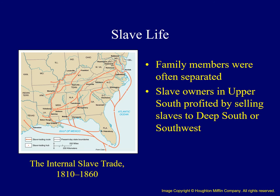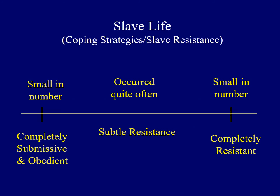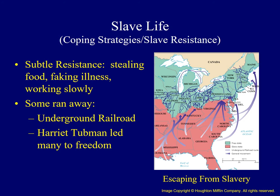However, there was always a potential that family members could be separated from one another. This map shows the internal slave trade in the United States. Many slave owners from the Upper South made large profits selling slaves to whites living in the Lower South or Southwest, where slavery was expanding. This image of a slave auction catches what many believed were the worst aspects of slavery, as family members might be ripped apart, never to see one another again. A majority of slaves engaged in some sort of subtle resistance — they stole food or other items, faked illnesses, worked incredibly slowly, and even manipulated situations to their advantage.